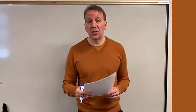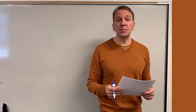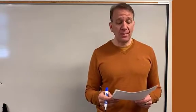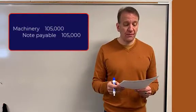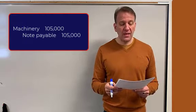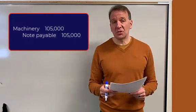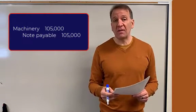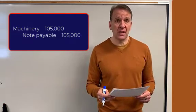Now let's take a look at this first journal entry. When we purchase this machinery, we're going to debit machinery $105,000, and then we will credit cash or notes payable $105,000 for the purchase of the machinery.